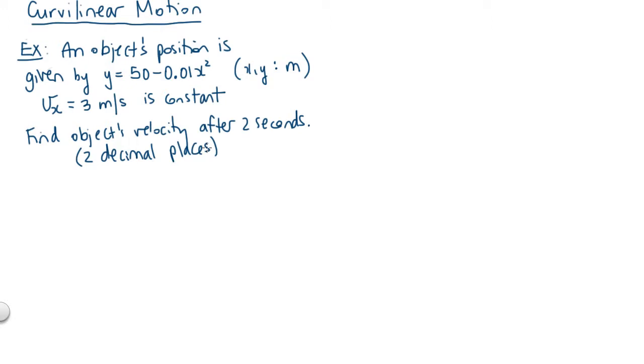In a normal velocity problem, we would try to figure out the velocity in the x direction and also the velocity in the y direction. This problem is different because we're actually given the horizontal velocity right off the bat. The rate of change of the x coordinate with respect to time is 3 meters per second. So let's work on finding v sub y, the velocity in the y direction.